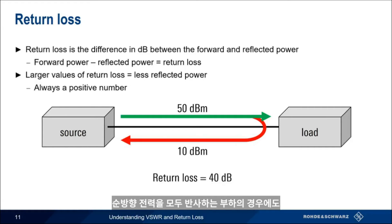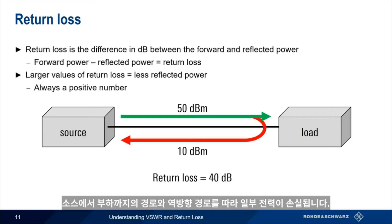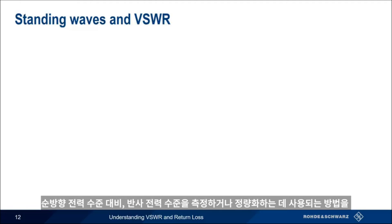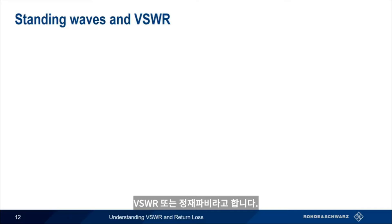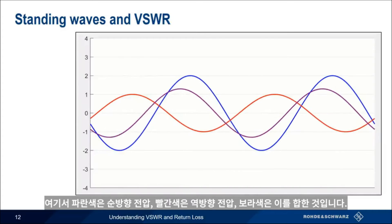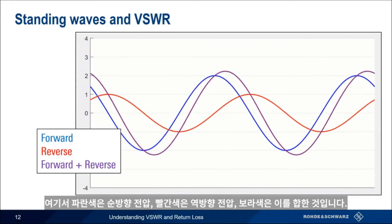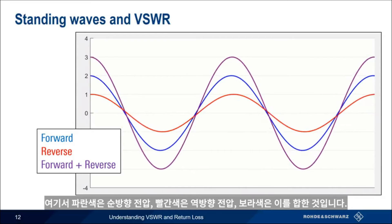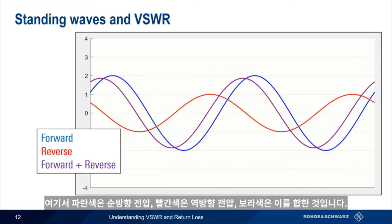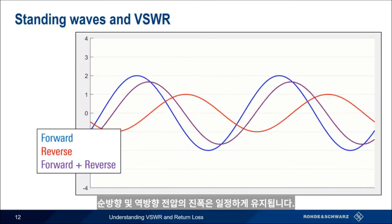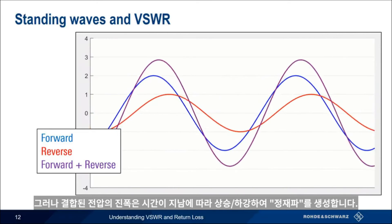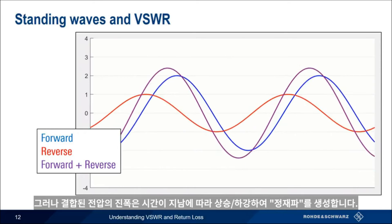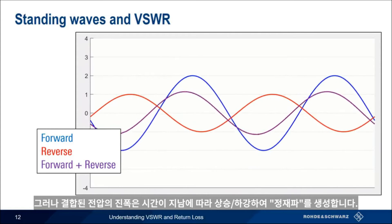Even in the case of a load that reflects 100% of the forward power, some power will be lost along the path from the source to the load and back. The other quantity used to quantify reflected power relative to forward power is VSWR, or Voltage Standing Wave Ratio. Here, the blue trace is the forward wave voltage, the red trace is the reflected wave voltage, and the purple trace is the combined voltage on the line. Note that the amplitudes of the forward and reverse voltage remain constant, but the amplitude of the combined voltage trace rises and falls over time, creating what's referred to as a standing wave.